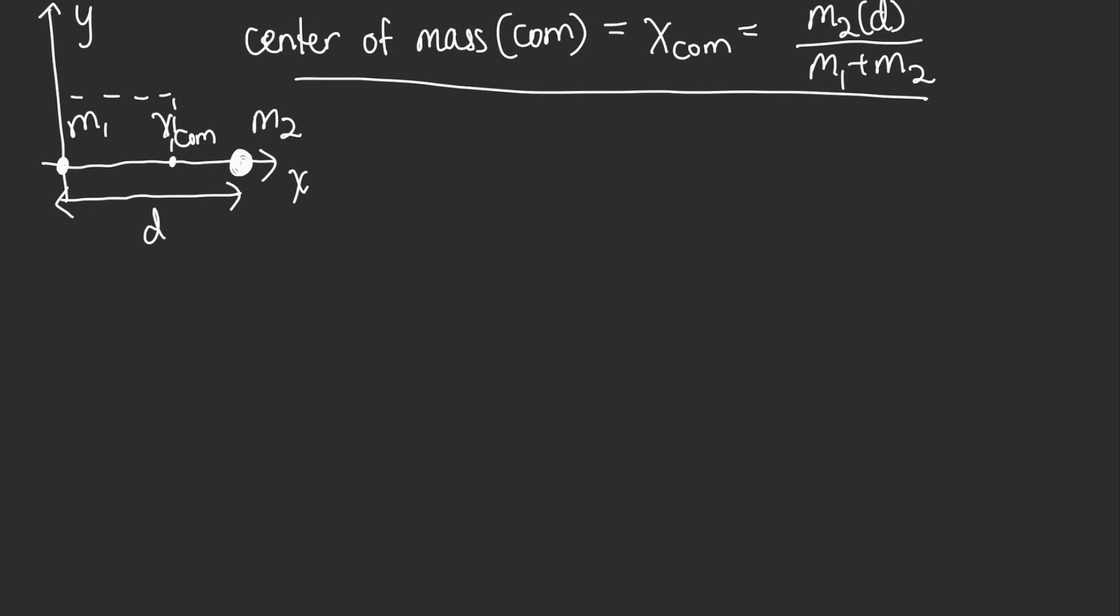And suppose that, let's just take an example, suppose that M2 equals 0 in this case. So then there's only one particle of mass M1, and the center of mass must then lie at the point of that particle.